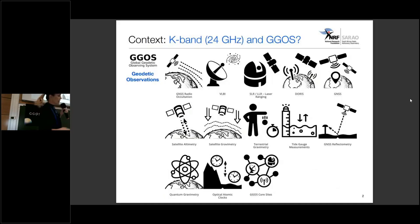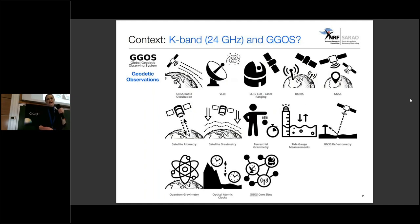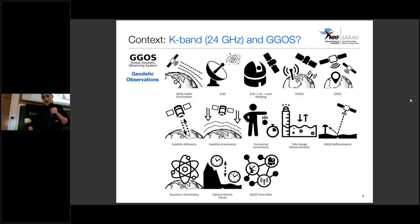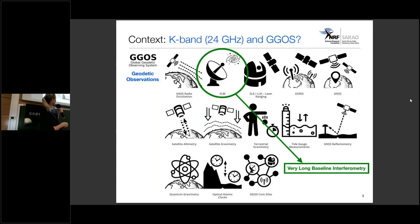Going to the GGOS webpage, if we look at the list of observations and go to the observations tab, there's a list of instruments and techniques. I'll specifically talk about very long baseline interferometry.